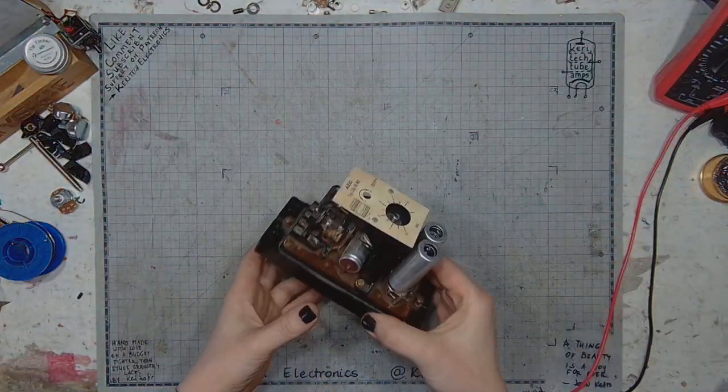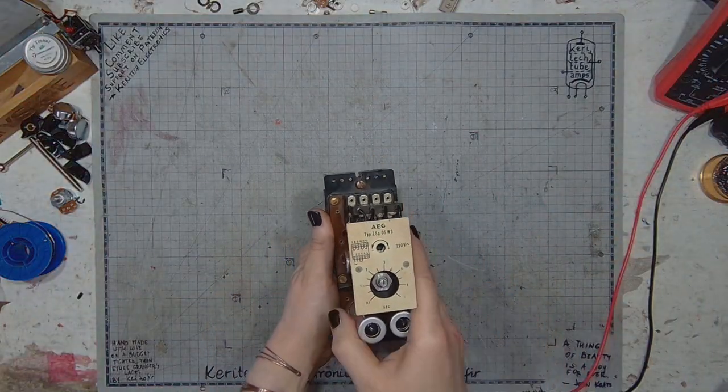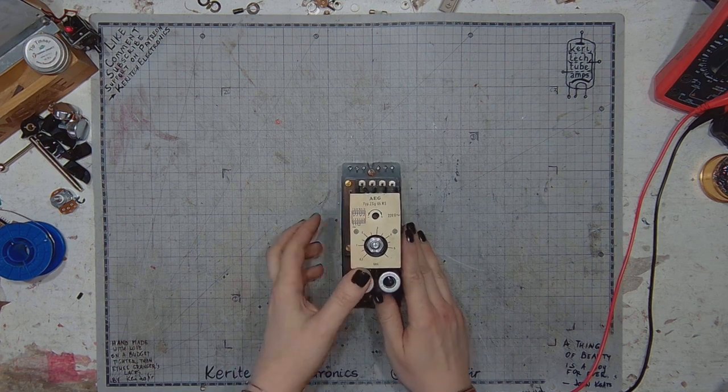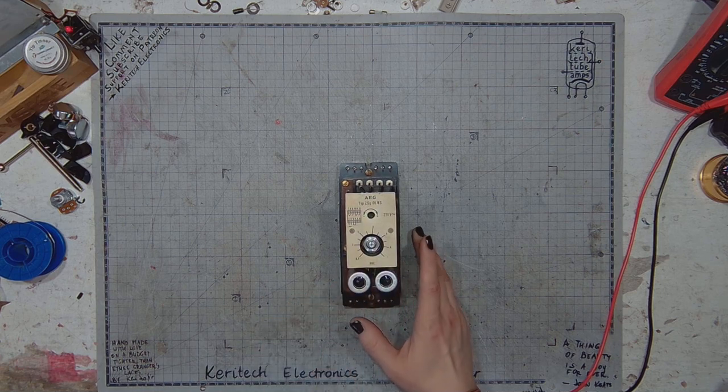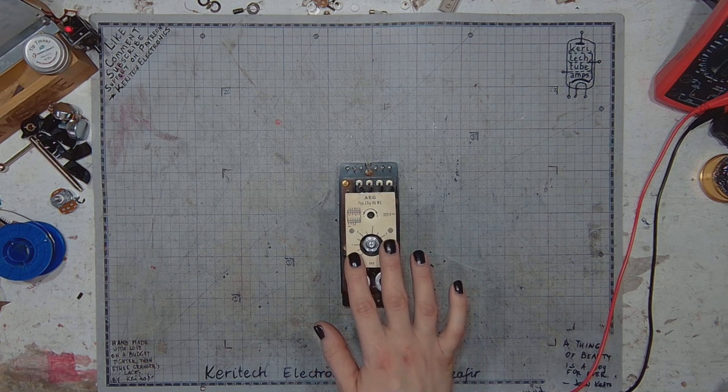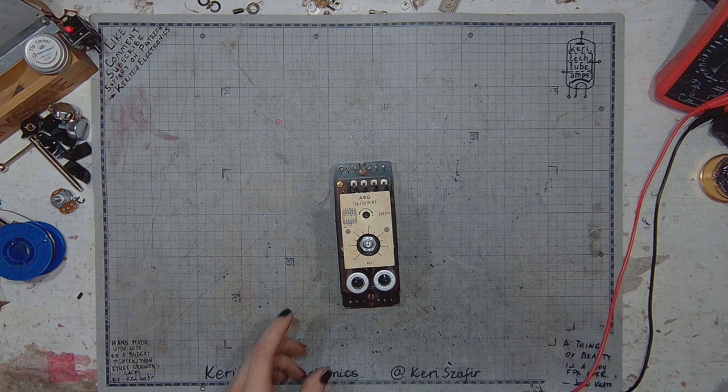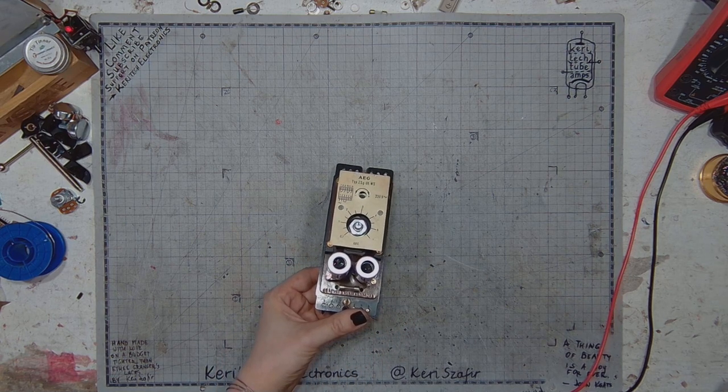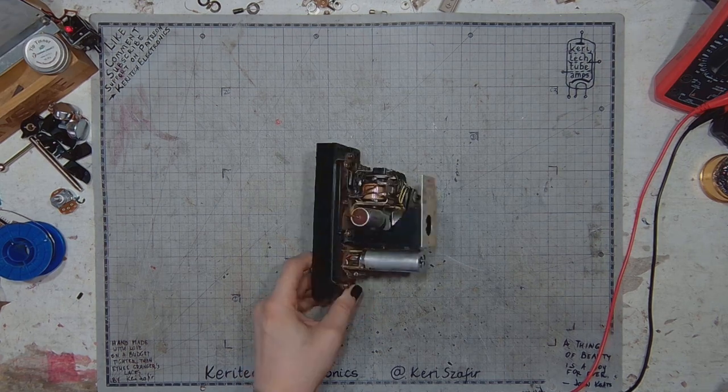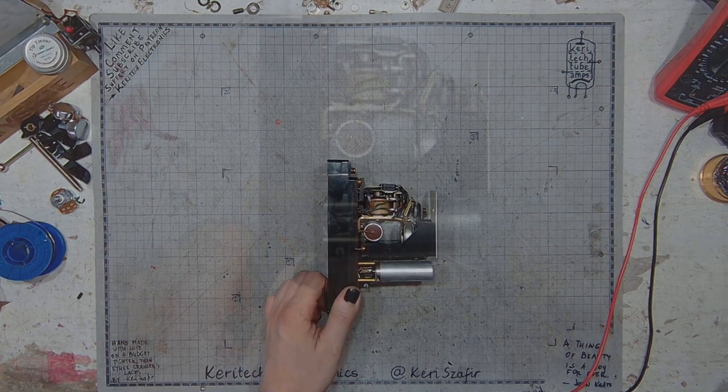So we've got this AEG, old German type ZSGN05WS. This is a time relay, an industrial automation component. And let's get a closer look.